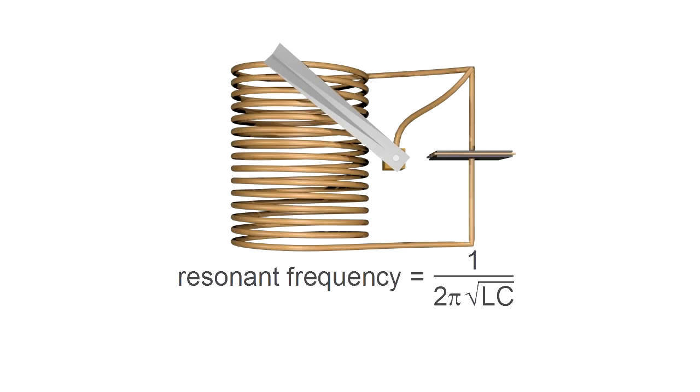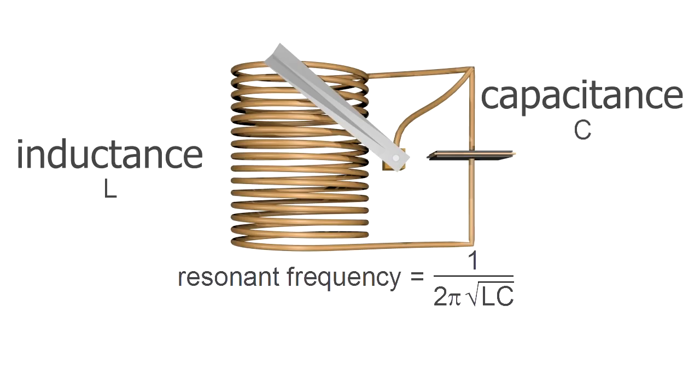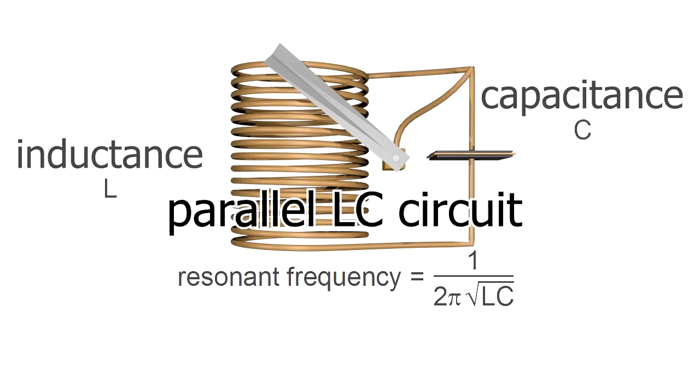To do so, we start with this formula. It's the formula for the resonant frequency of a coil and capacitor connected in parallel. The L is the coil's inductance and the C is the capacitor's capacitance. It's for that reason we call this a parallel LC circuit. We have a coil's inductance L in parallel with a capacitor's capacitance C.